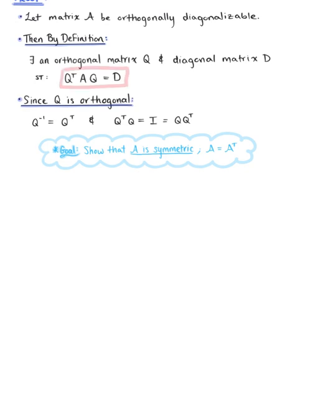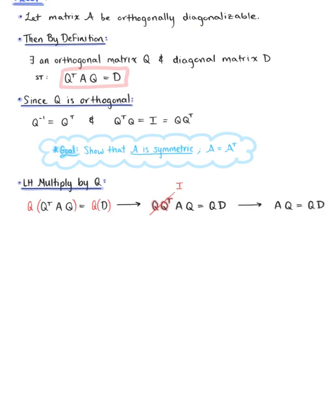So with this in mind, let's take this equation and left-hand multiply by matrix Q. We can rewrite this by applying the properties of invertible matrices to attain the equation matrix A times matrix Q equals matrix Q times matrix D.